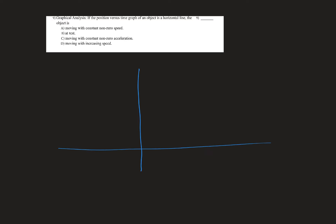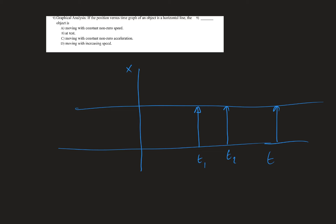If the position versus time graph of an object is a horizontal line, the object doesn't move — x stays the same at all times. The slope of an x-t graph equals velocity, so the velocity is zero. The answer is B: the object is at rest. It is not moving with constant non-zero speed, not accelerating, and not increasing in speed.